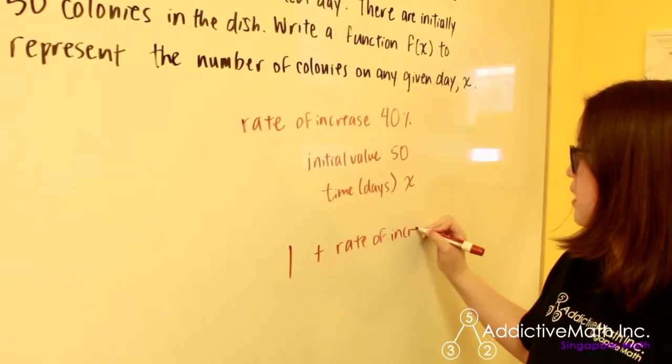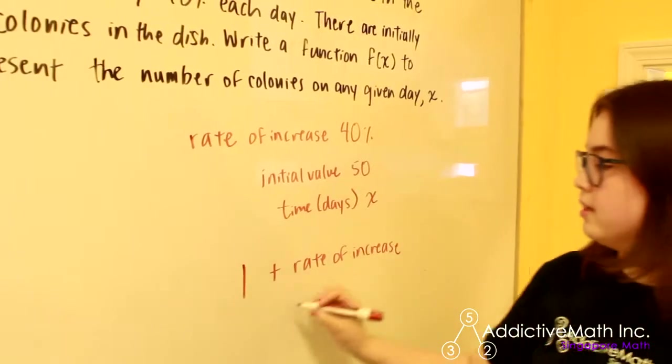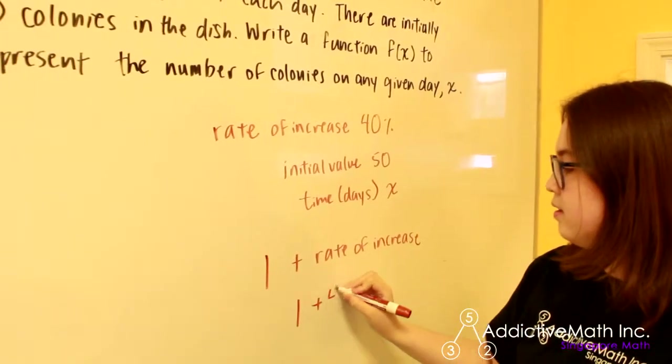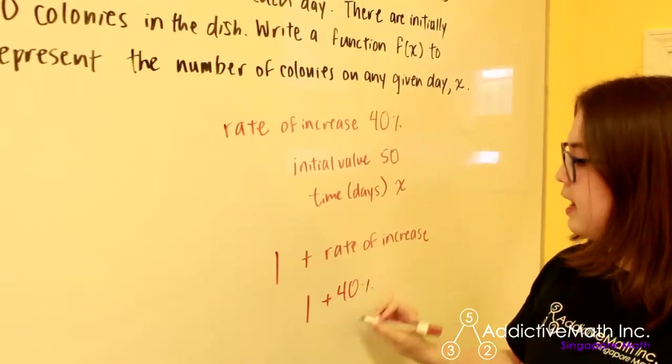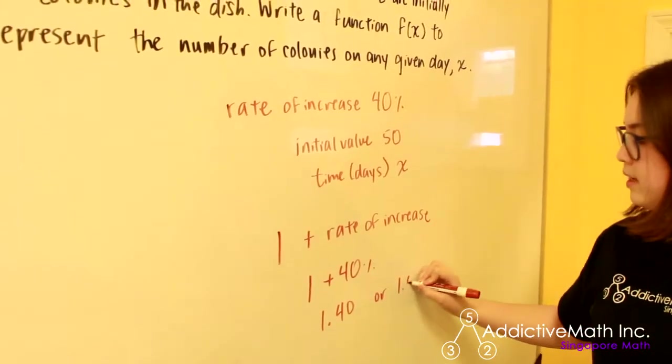So in our case, it's growing by 40 percent. So we do 1 plus 40 percent and that gives us our rate 1.40 or just 1.4.